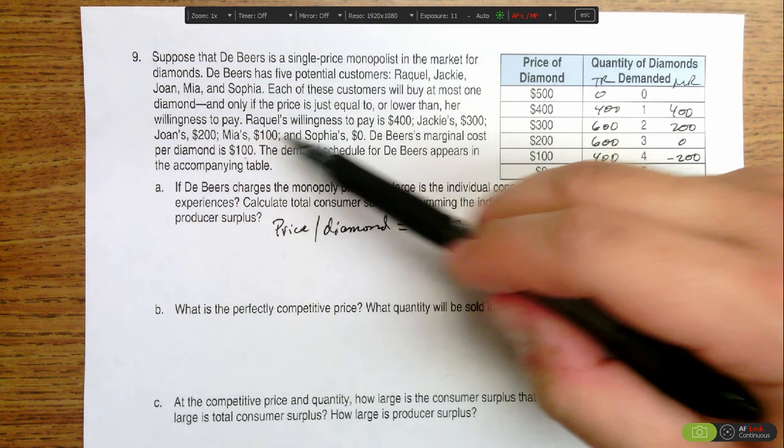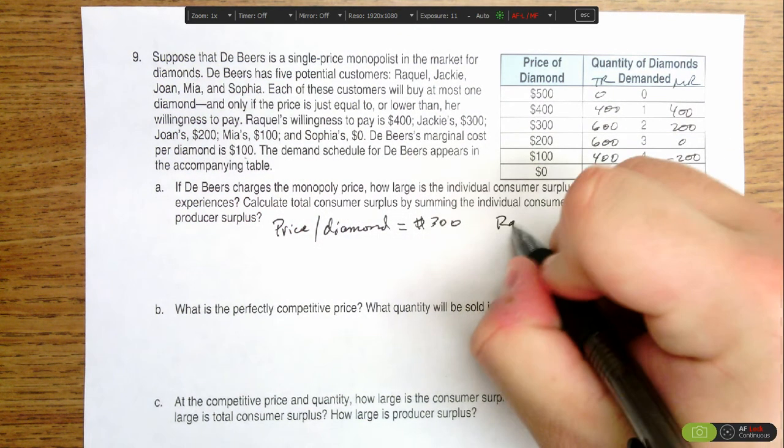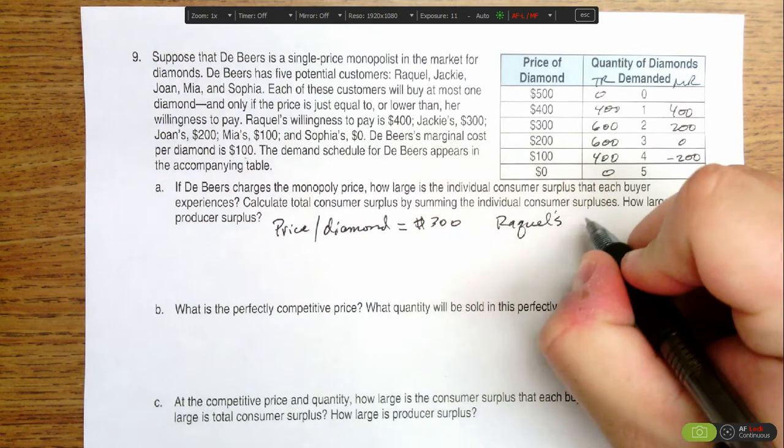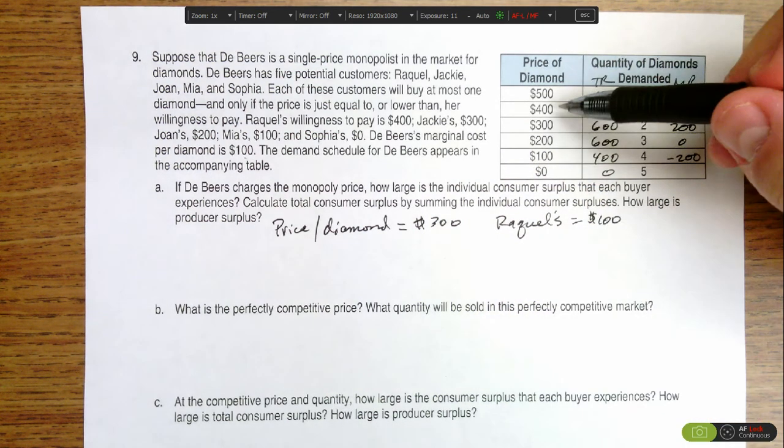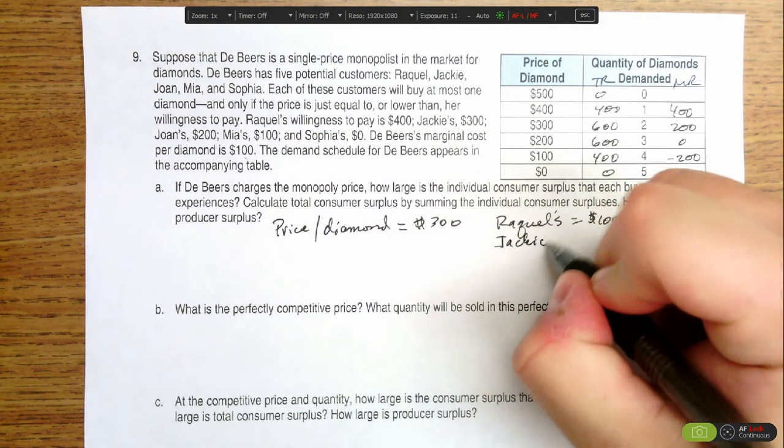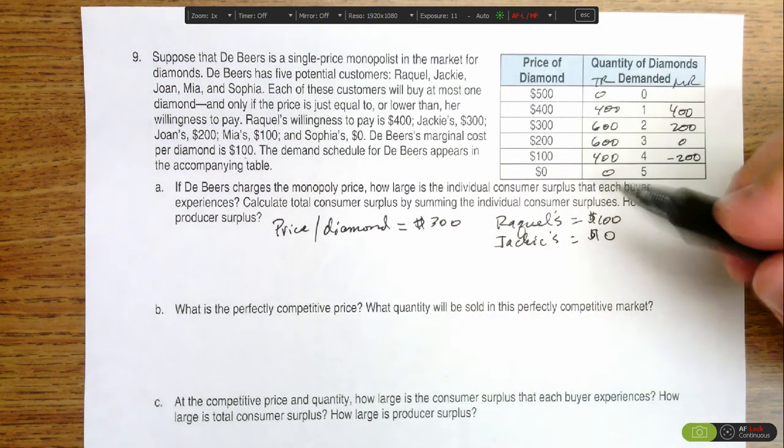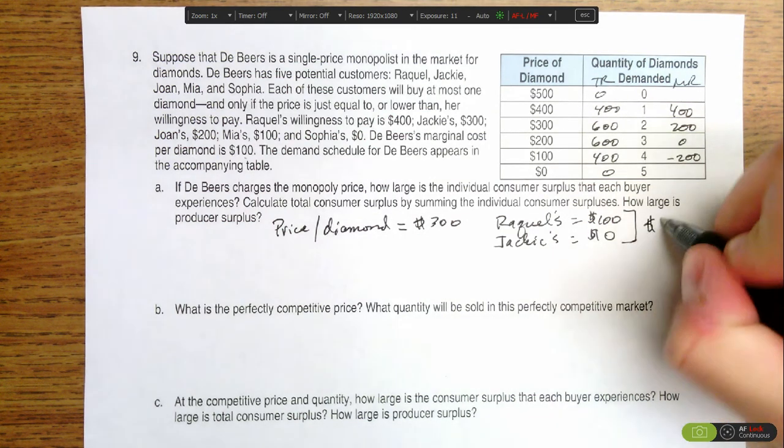Raquel is willing to pay $400 for a diamond, she only has to pay $300. So Raquel's consumer surplus is equal to $100. She's willing to pay $100 more than she had to. And Jackie is willing to pay $300, and she gets to pay $300, so her consumer surplus is zero. So the total consumer surplus in this market is going to be $100, which is the sum of Raquel's surplus and Jackie's.